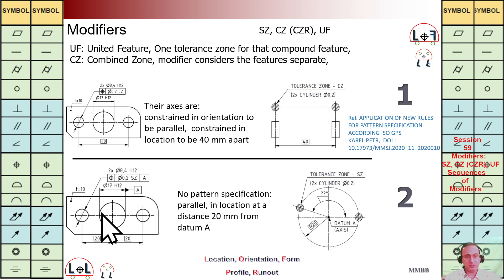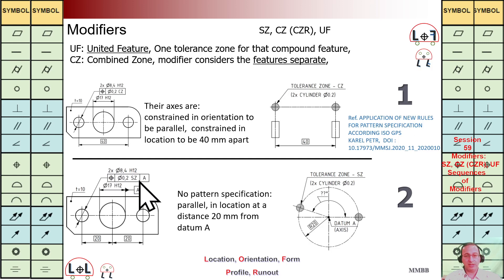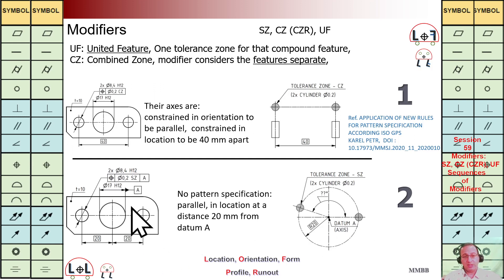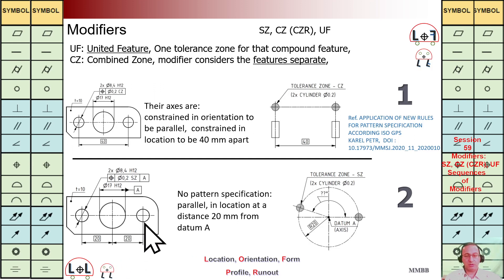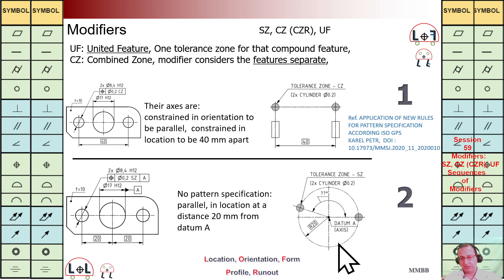In the second example we have the same geometry, but we use SZ with respect to datum A. This means there are separated zones — the two features are multiplied separately. The TZ applies to the center of each hole with respect to A at distance 20. They can rotate with respect to each other but they are parallel to A, and therefore parallel to each other.